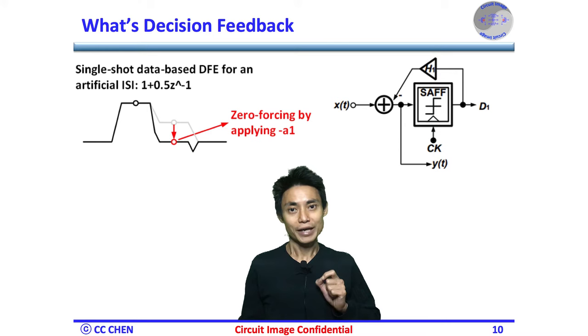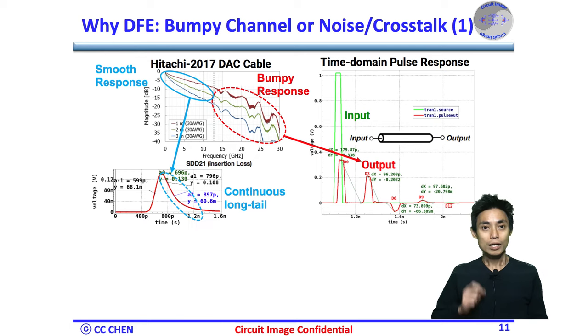Obviously, the DFE must make the right decision to cancel the ISI. If not, that would add the ISI and create propagation error, which usually might not be a big issue in a serial link. As we've known in the TX FFE video, the discrete-time equalizer can equalize the bumpy channel frequency response better than the CTOE does, which is also the DFE's advantage.